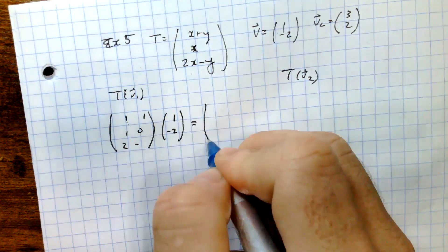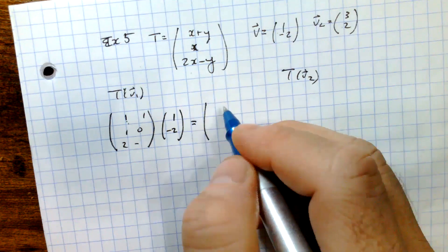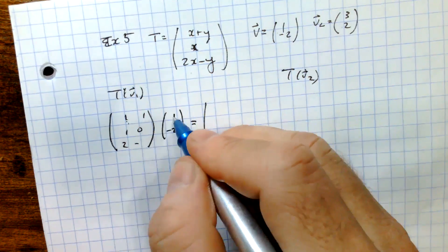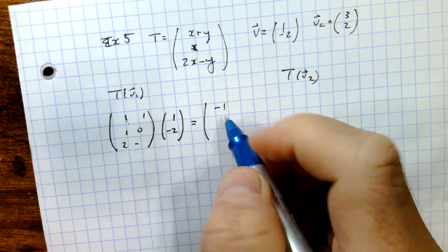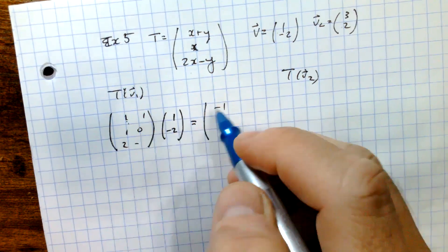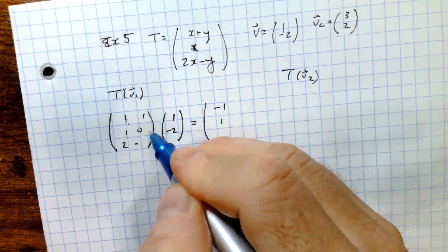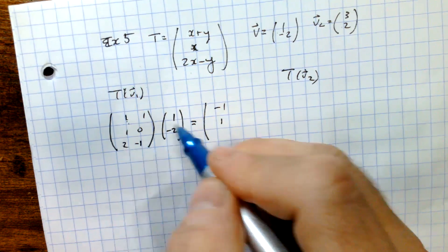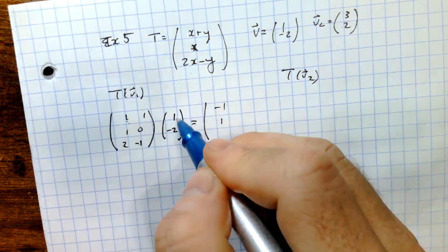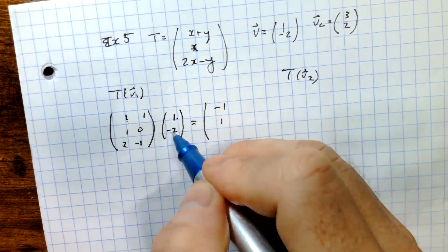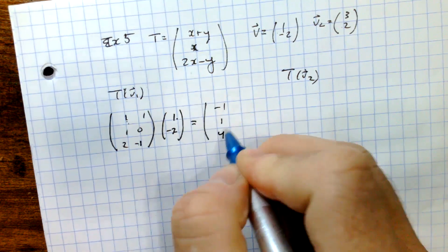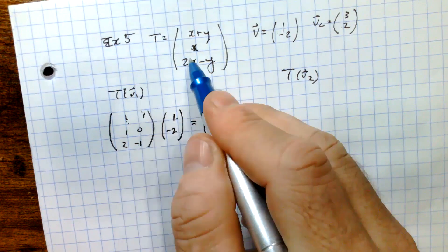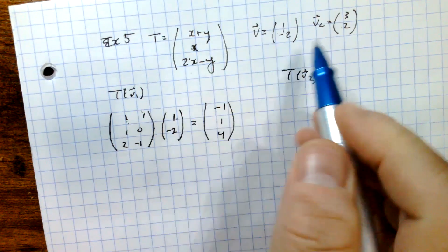And so this produces a vector: 1 times 1 plus 1 times negative 2 is negative 1, and then 1 times 1 is 1, and negative 2 times 0 is just 0. And then 2 times 1, and then negative 1 times negative 2, so you get 2 plus 2, which is 4. This is the transformation of T on this vector V1.